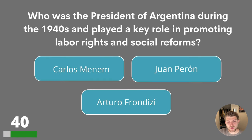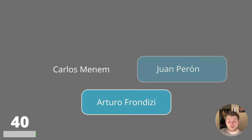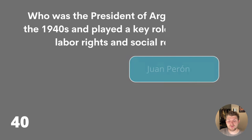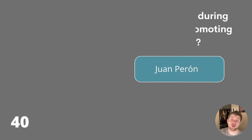Question forty. Who was the President of Argentina during the 1940s and played a key role in promoting labour rights and social reforms? Carlos Menem, Juan Perón or Arturo Frondizzi? The answer is Juan Perón.